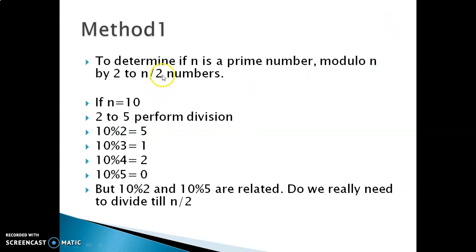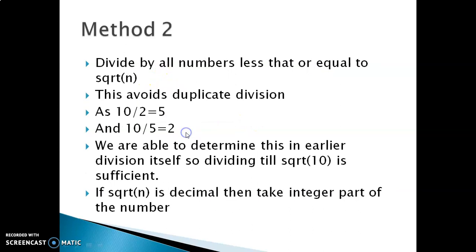What we can do is reduce the limit of n/2 to square root of n. If we perform the division with all the numbers less than or equal to square root of n, then also we are able to find out that the number is prime or not. As we can see, division by 2 will give 5 and division by 5 will give 2, so we can just find the square root of 10 and perform division only till that limit.